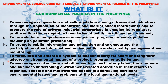Furthermore, according to PD 984, Section 6, Item G, or the Pollution Control Law, this gives the agency the right to collect environmental users' fees or pollution charges in proportion to the burden on the environment. PD 984 also gives the DENR authority to issue, renew, or deny permits under conditions it may deem reasonable for the prevention and abatement of pollution from the discharge of sewage and industrial waste, and to enforce reasonable fees and charges for issuance or renewal of all permits. PD 984, enacted in 1976 and implemented in 1978, aims to prevent, abate, and control pollution of water, air, and land for the more effective utilization of resources.